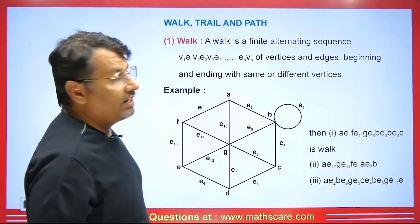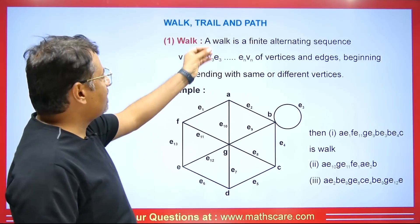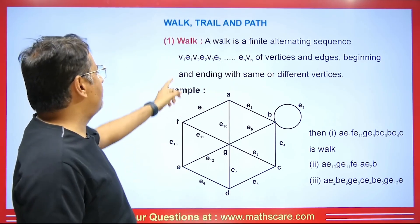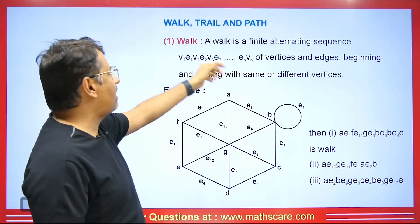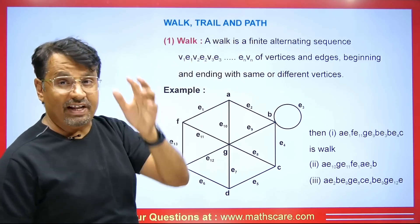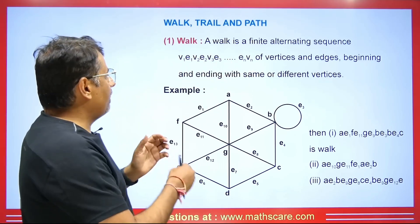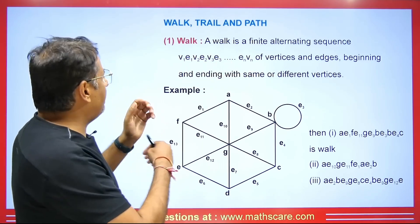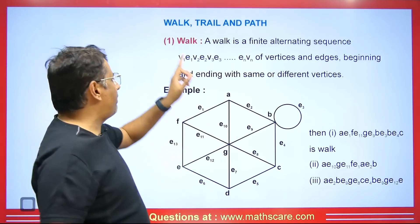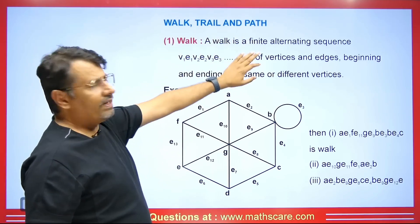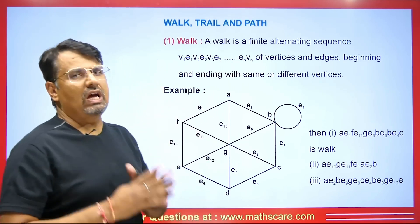We will talk about walk, trail and path. First, what is a walk? A walk is a finite alternating sequence V1, E1, V2, E2, V3, E3 — where V1, V2, V3 are vertices and E1, E2, E3 are edges — beginning and ending with the same or different vertices. It starts from V1 and ends at V1 or at some other vertex. That is when we call it a walk.